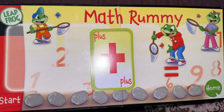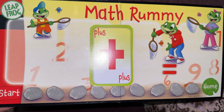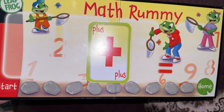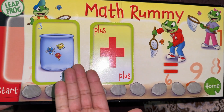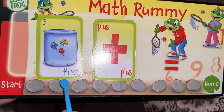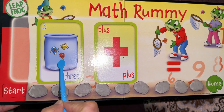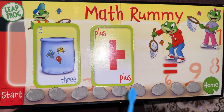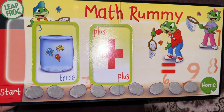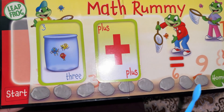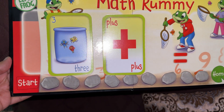Let's solve some questions and learn addition. For example, we have three cute mosquitoes — can you see how cute they are? Let's count: one, two, three. We have three mosquitoes. Now let's do the first question: three plus five.